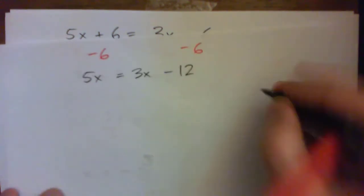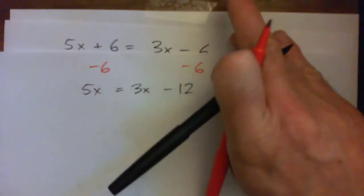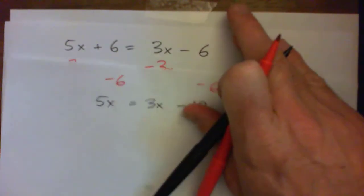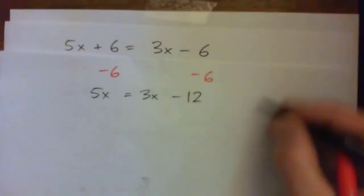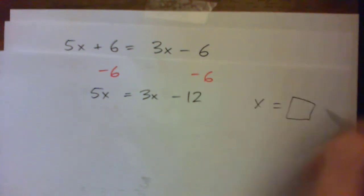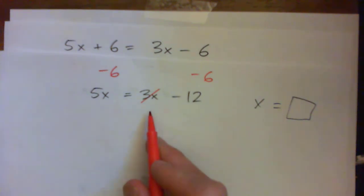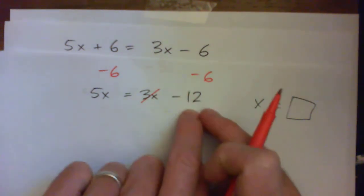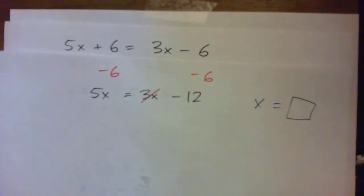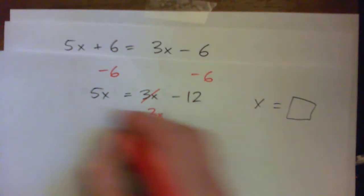And again, I need x's on one side and numbers on the other. And so I want x equals some number, right? So I need to get rid of this, the thing that's complicating my life, because I've got a number here. That's great. I need all the x's on the other side, though. So let's subtract this dude. See?